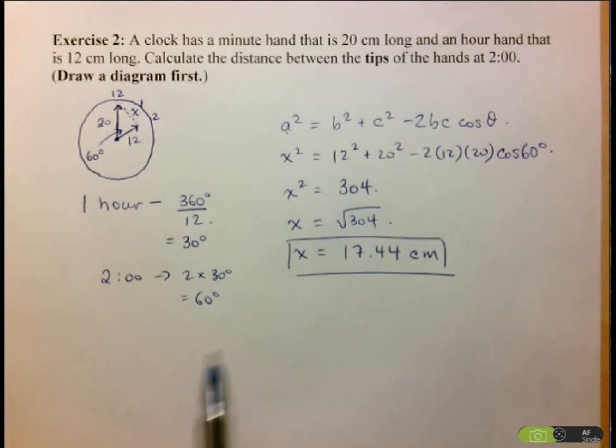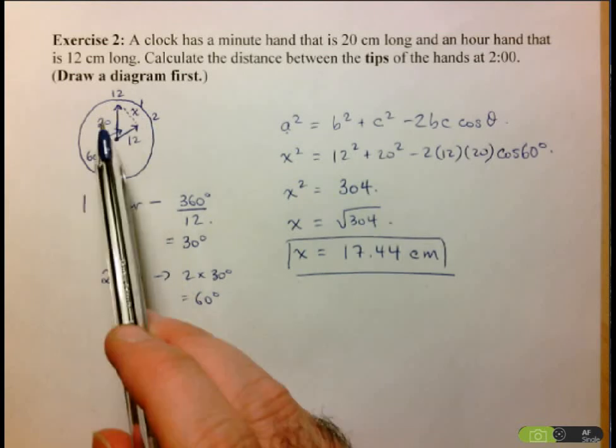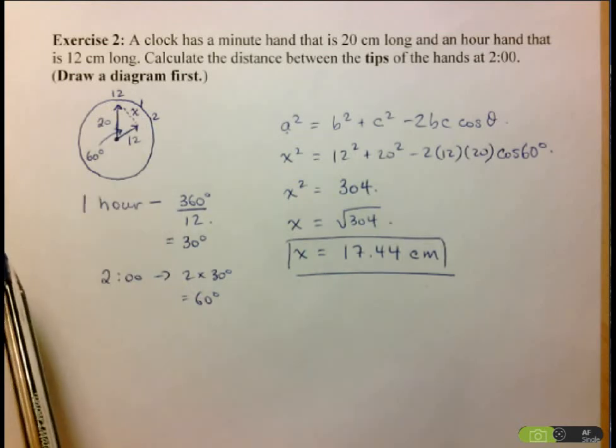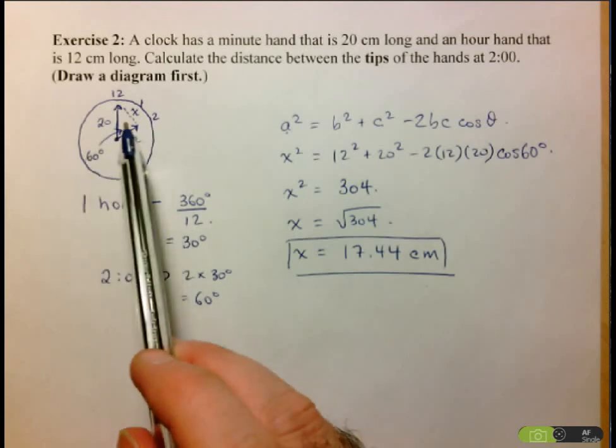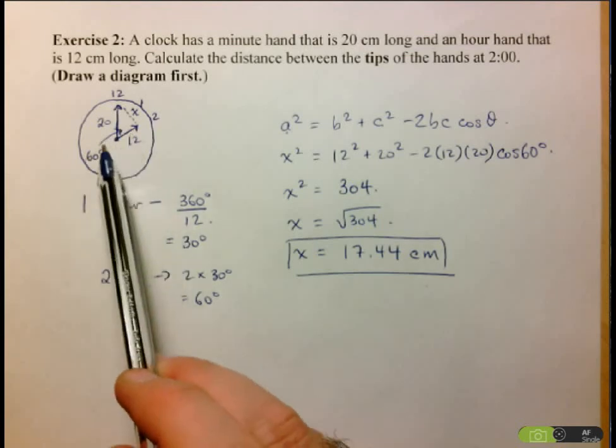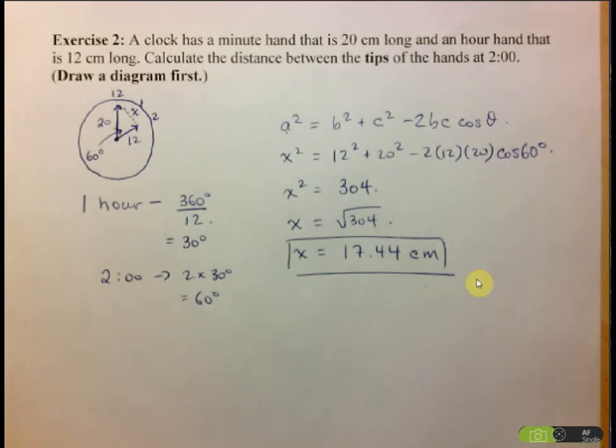So again, it was about using the cosine law, but before we got there, we had to draw a diagram, figure out what triangle we were working with, and we had to use one of our properties of geometry, which is that the angle going around a full circle is 360 degrees. That's it for this question.